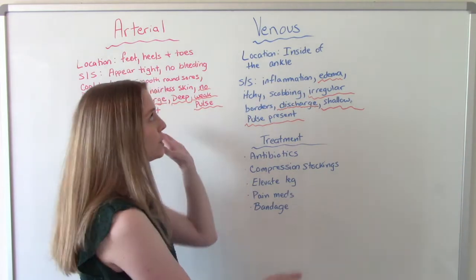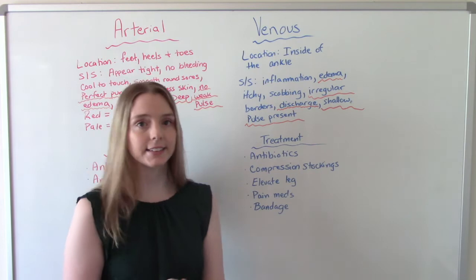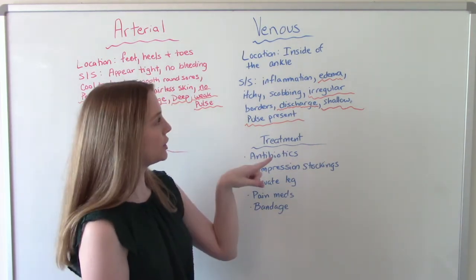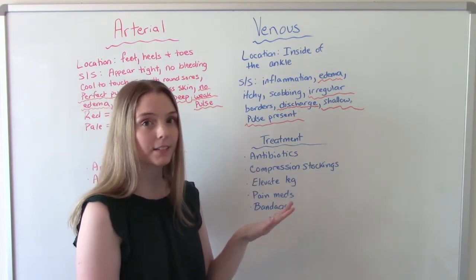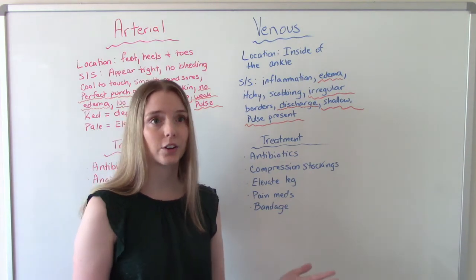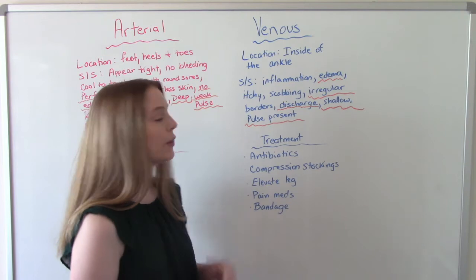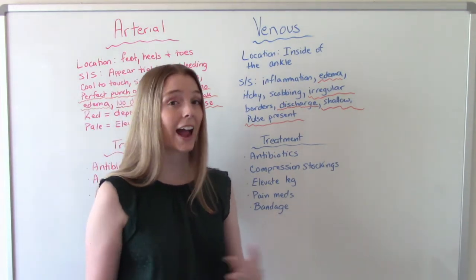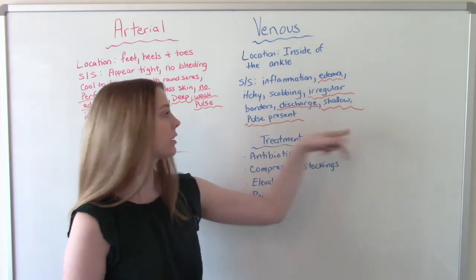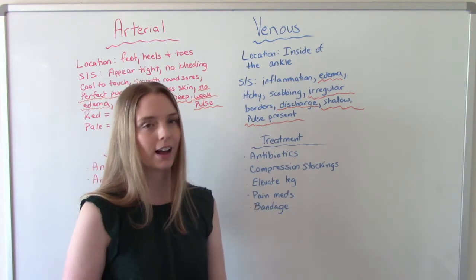Venous ulcers are usually located on the inside of the ankle. Signs and symptoms include inflammation, edema, scabbing, and itching. The borders are going to be irregular — not perfect circles like the arterial ones. There will be some discharge, drainage, and maybe even active bleeding. These wounds are much more shallow, and we should have no problem finding a pulse on these patients.